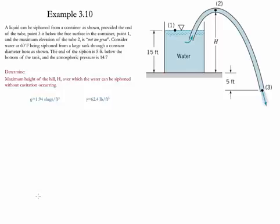Example 3.10. In this example, a liquid can be siphoned from a container as shown, provided at the end of the tube, which is point 3, is below the free surface of the container at point 1, and the maximum elevation at point 2 is not too great.